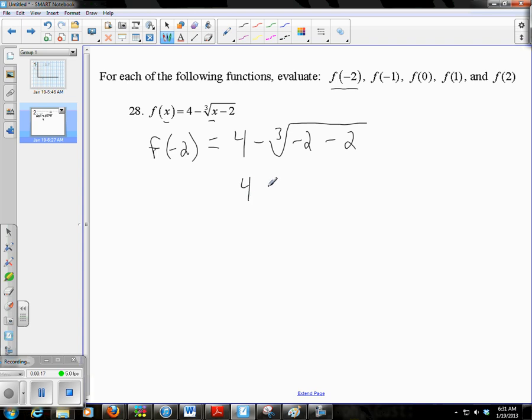So this is going to be 4 minus the cube root, and then I follow the order of operations. I'm going to treat radicals like it's an exponent. So negative 2 minus 2 more is negative 4.